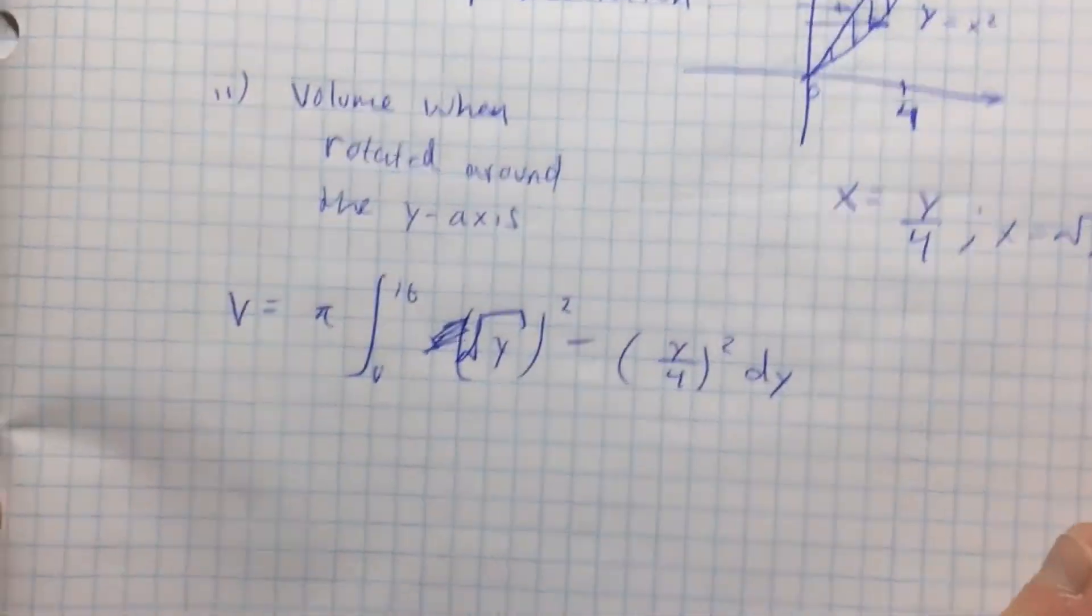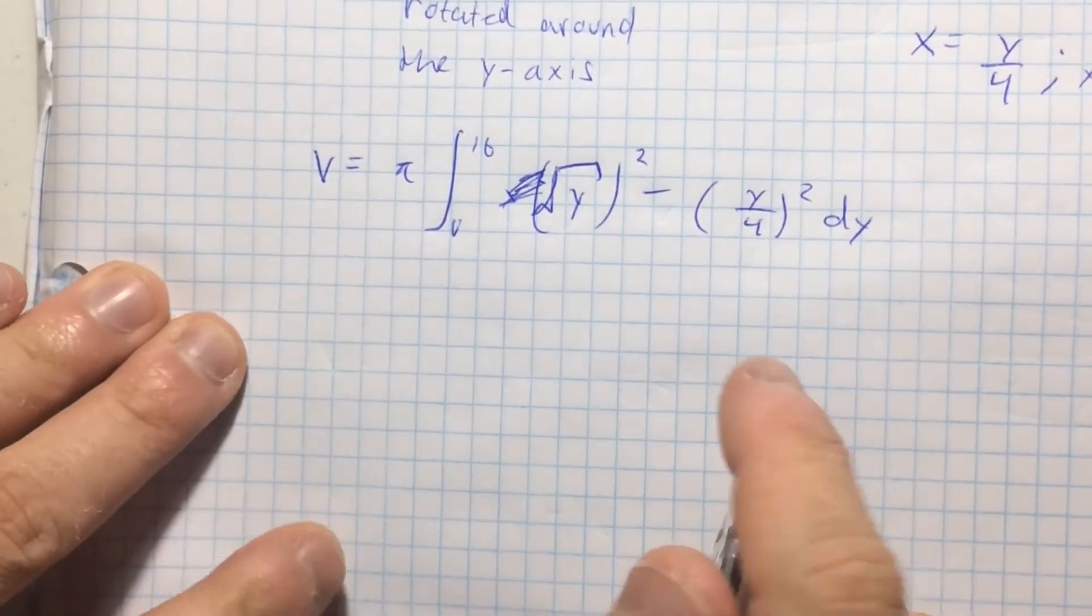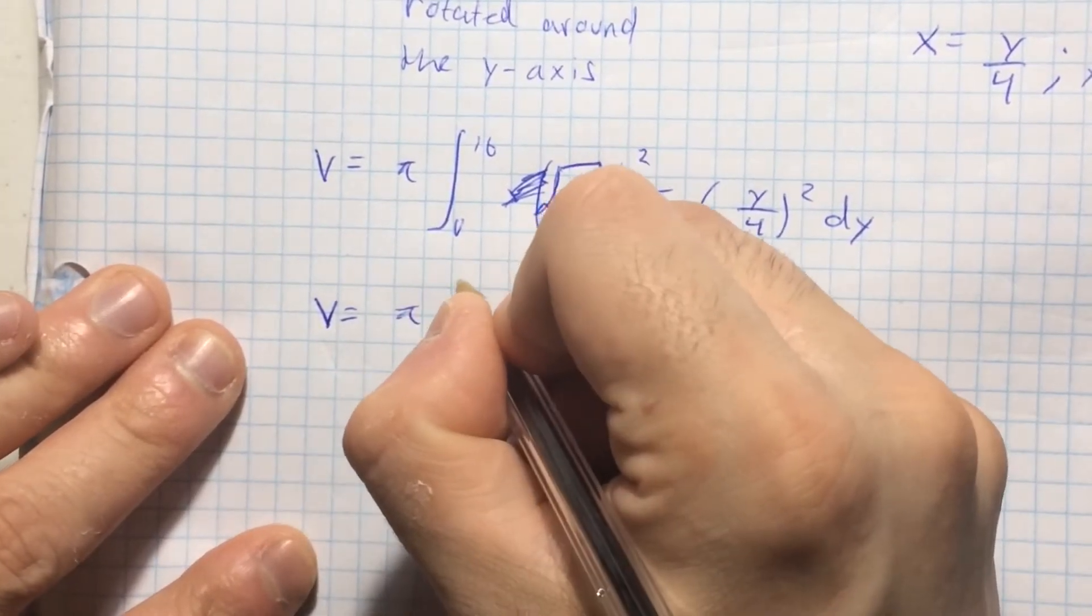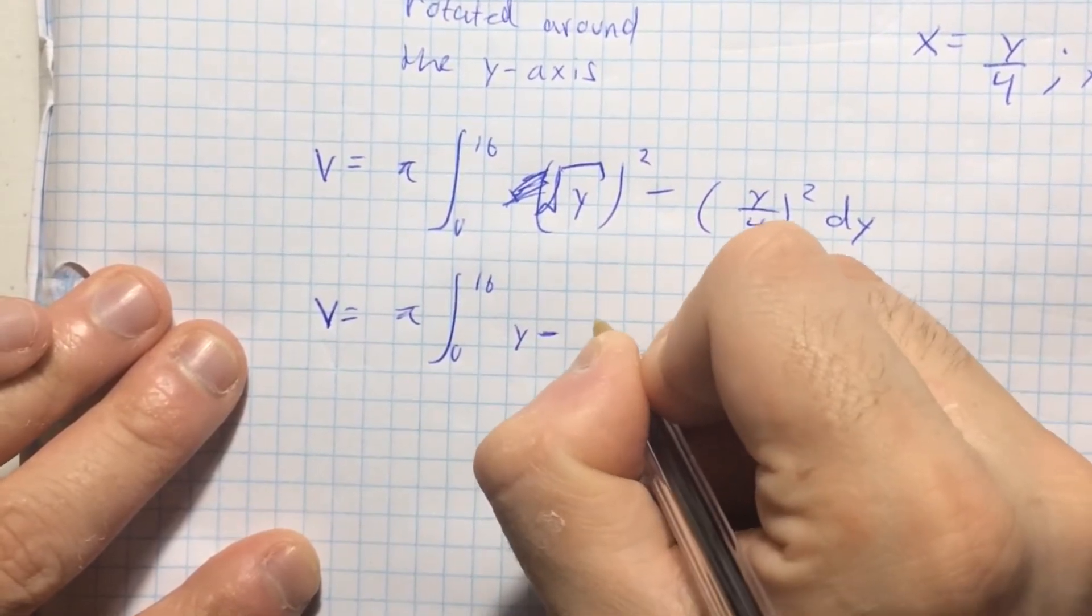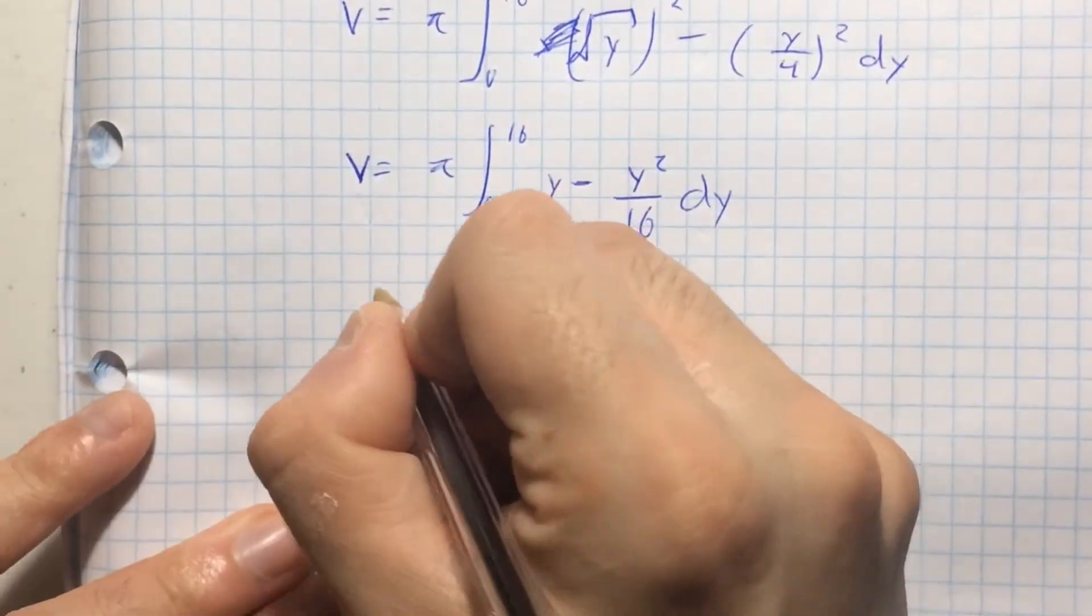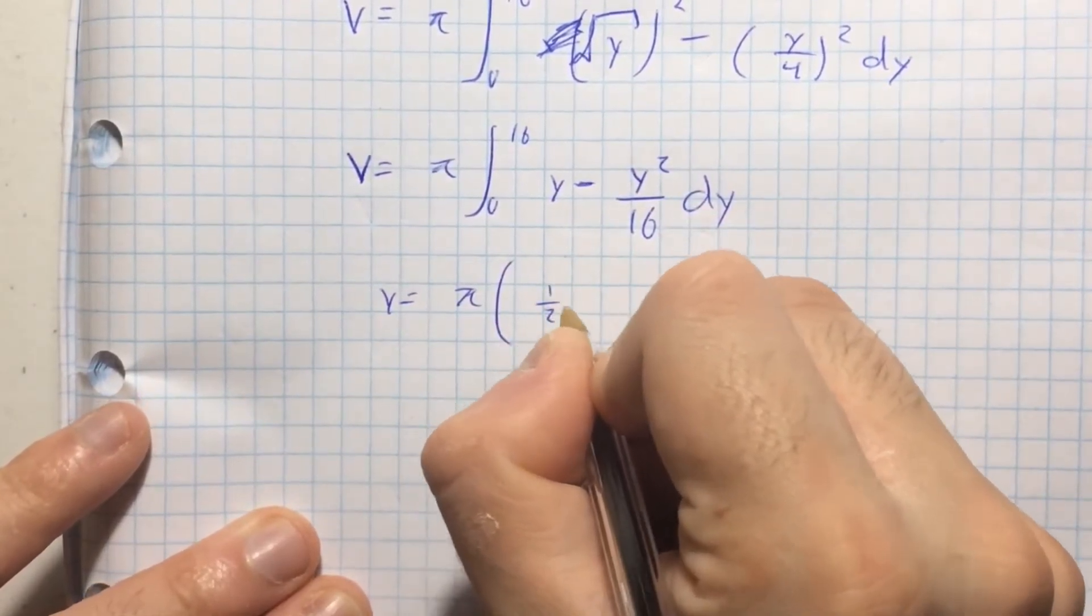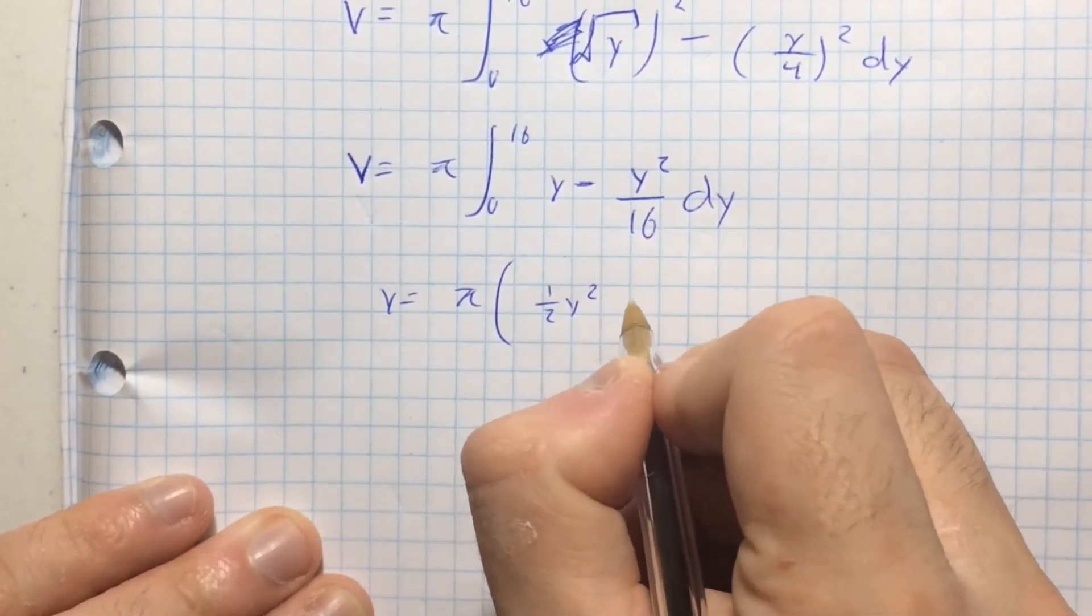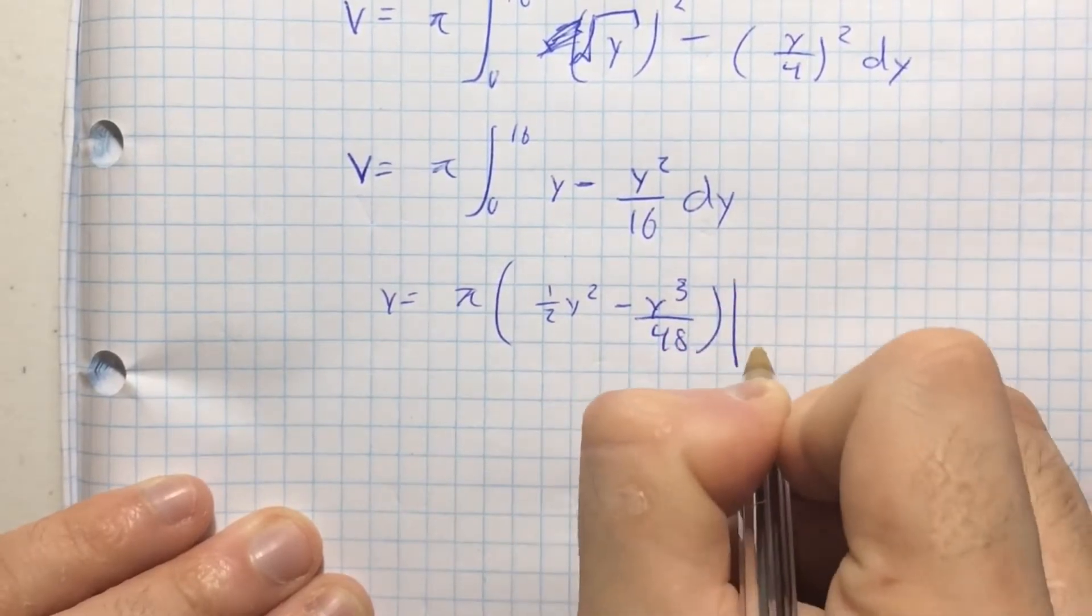I am so used to integrating with respect to x. That was the silliest mistake I've ever made in my entire life. I'm so sorry, but I caught it. So let's find out. So volume is equal to pi times the integral from 0 to 16 of y minus y squared over 16 dy. And then that means that the volume is equal to pi times y squared over 2 minus y cubed over 48 from 0 to 16.